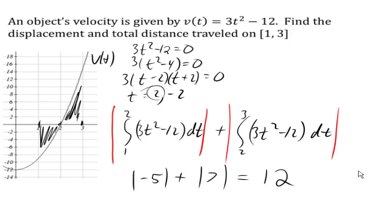That is the total distance traveled, showing our object moved 5 feet or meters backwards, then 7 feet or meters forwards. Displacement of 2, total distance traveled of 12.